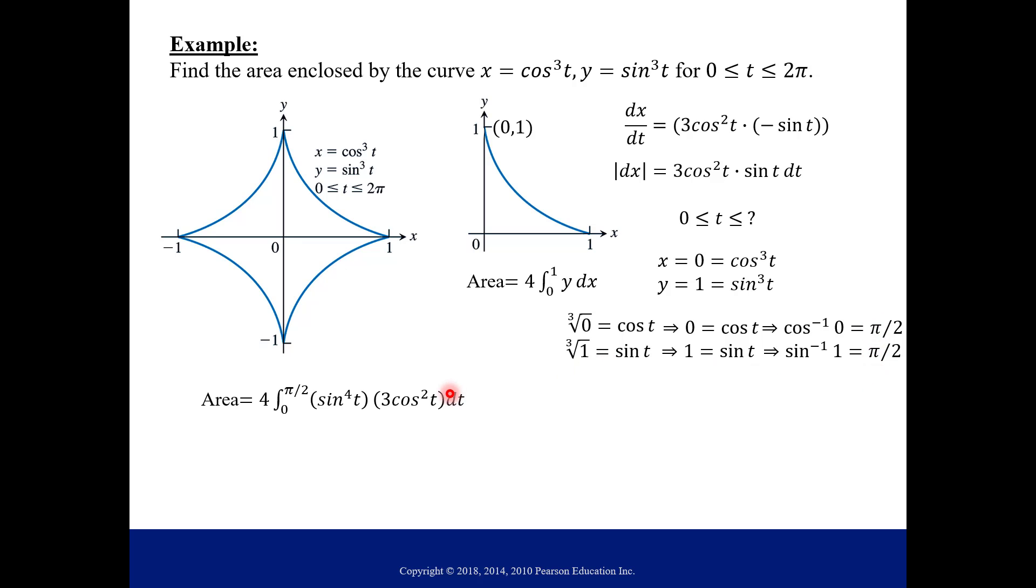So our integral here, we're changing it. We substitute for y, we substitute for dx, and notice our limits of integration changed to be in terms of t because this integral is now in terms of t. If I just factor out this 3, we have sine to the 4th power of t times cosine squared t dt. That's the setup.